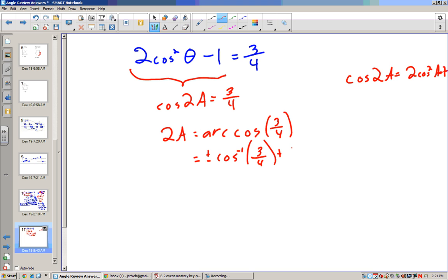plus, now it's degrees, so it's 360 n. Now I take the inverse cosine of 3 fourths, which is 41.4. So I have positive and negative 41.4 plus 360 n.